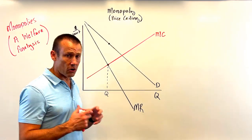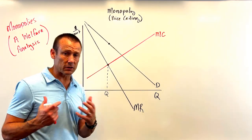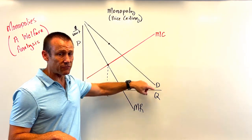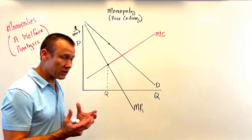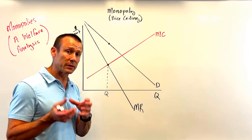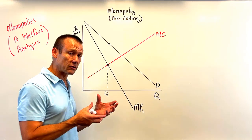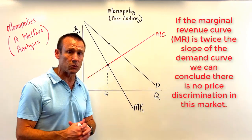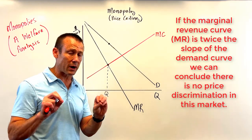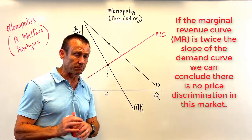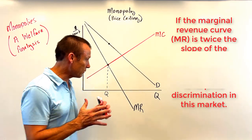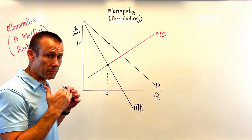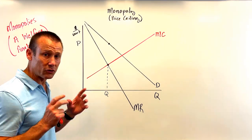The firm is the market and the market is the firm, so this is both the market and firm demand curve. You should see right off the bat that we're assuming no price discrimination — what tells you that is our MR curve has twice the slope of demand. So we're assuming no price discrimination.